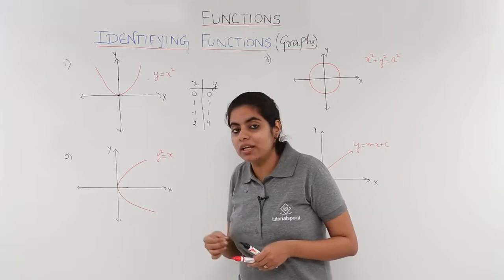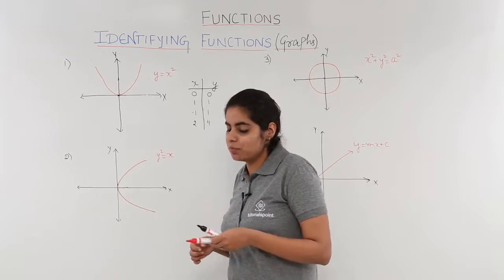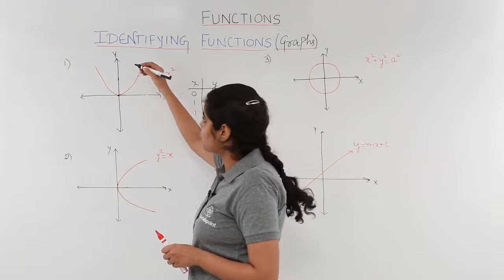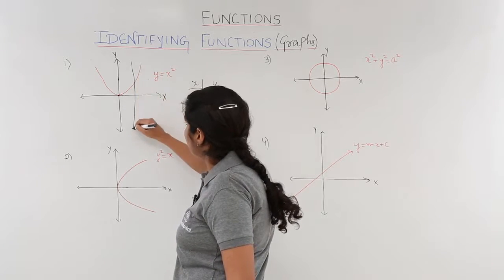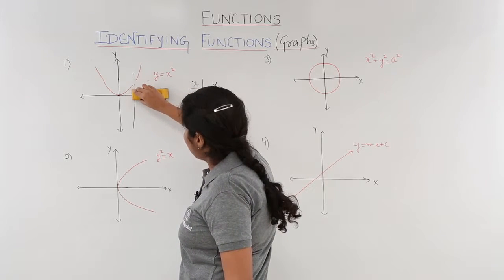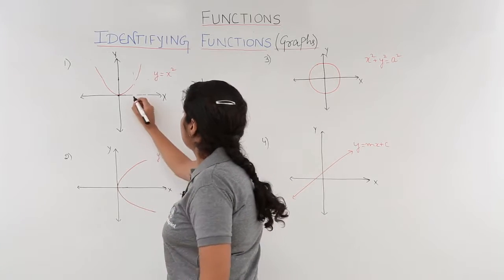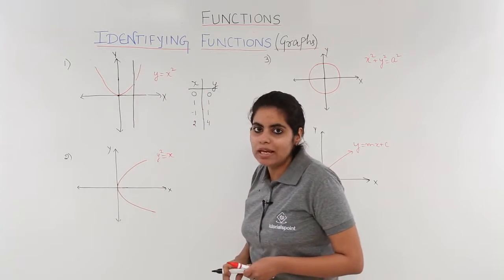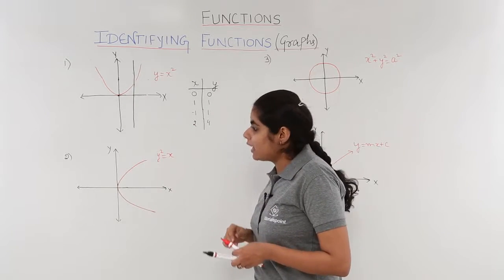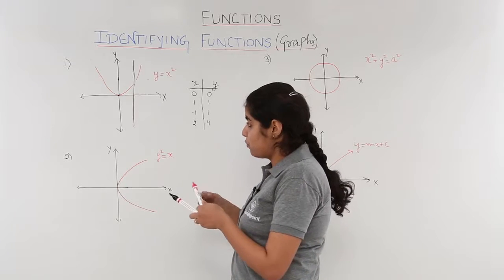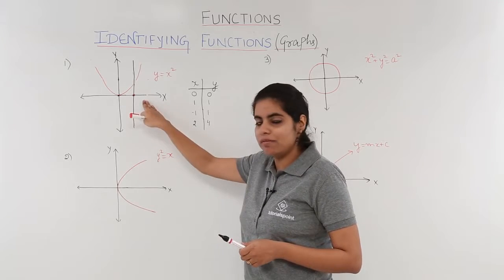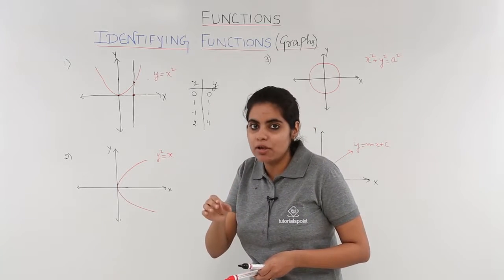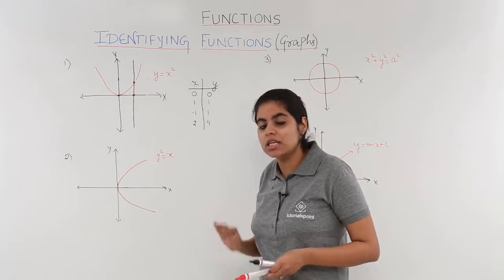The technique to find out whether a given graph is a function or not is as simple as drawing a line parallel to the y-axis. Now if the line is such that for a particular value of x, we obtain one and only one value of y — that means for a particular value of x, only one unique image exists — then it is a function.